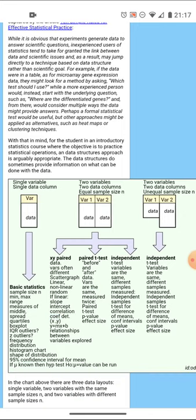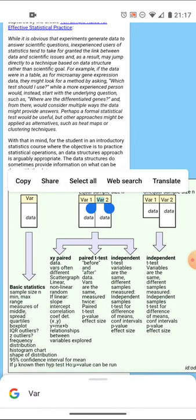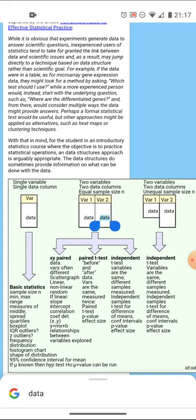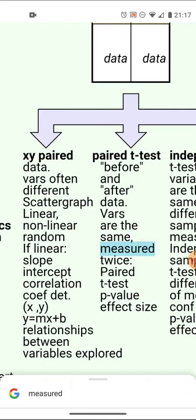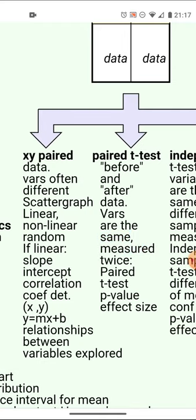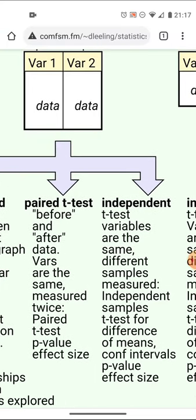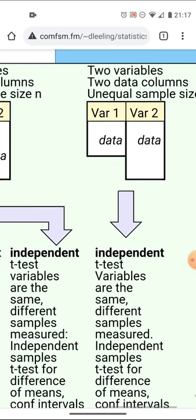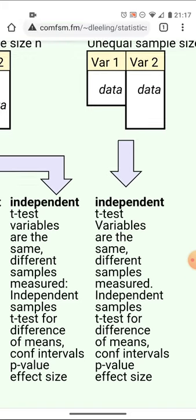If you have two columns, there are about three different things you could do. If the variables are different units - variable one and variable two are different variables - then you might be looking at paired data or seeing whether one variable predicts the other. If the same variable is in both columns, you may be looking at a paired t-test, especially if one is before and one is after. If there are two independent samples, you're probably looking at an independent t-test. If the two columns are of unequal length, you're probably looking at an independent samples t-test.